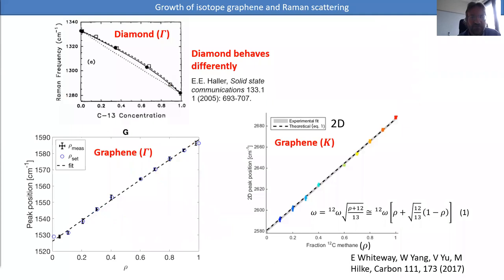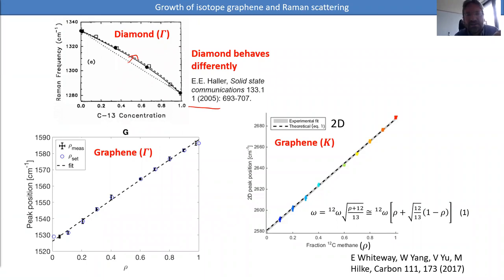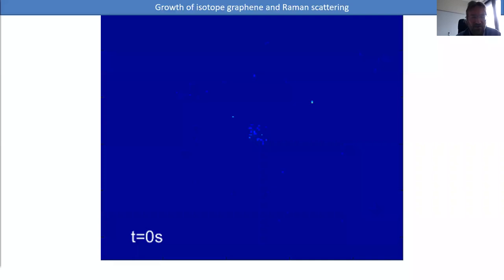We can show linearity down to about one percent resolution, which is actually surprising. In contrast, older work on diamond with different isotope concentrations shows the Raman frequency doesn't follow a linear slope with concentration — quite different from graphene. In graphene, whether you look at the G peak or the 2D peak, you get linear dependence. In diamond you don't, because electron-phonon coupling is quite important there — changing phonons via the large gap also affects the Raman frequency.